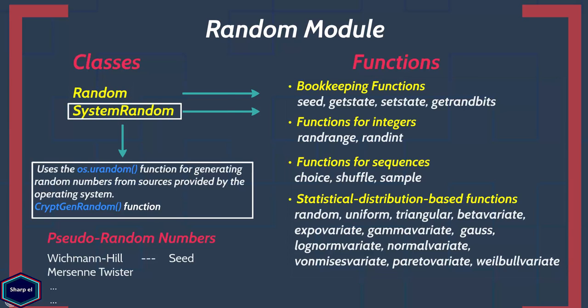The SystemRandom class provided by the random module generates pseudo-random numbers which can be used for cryptographic purposes. On Linux systems, the SystemRandom class calls the urandom system function, which obtains random numbers through the special device urandom. And on Windows, SystemRandom calls the CryptGenRandom function to generate random numbers.